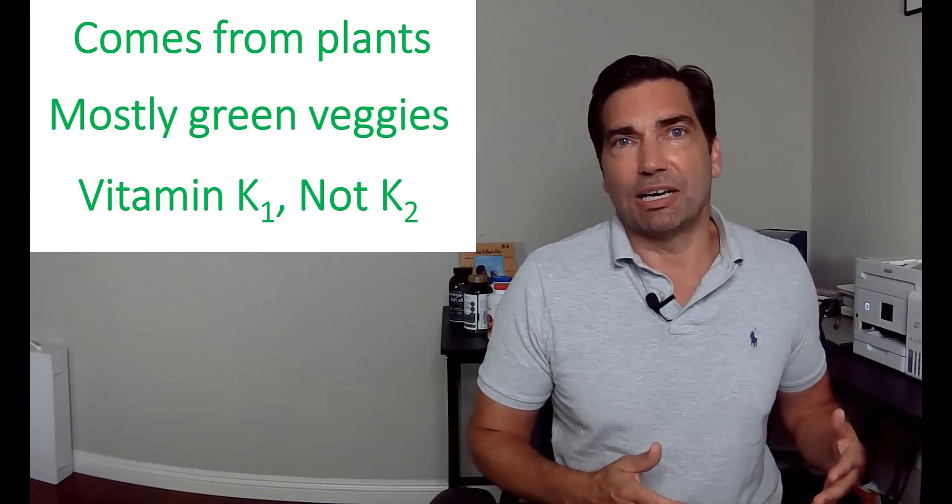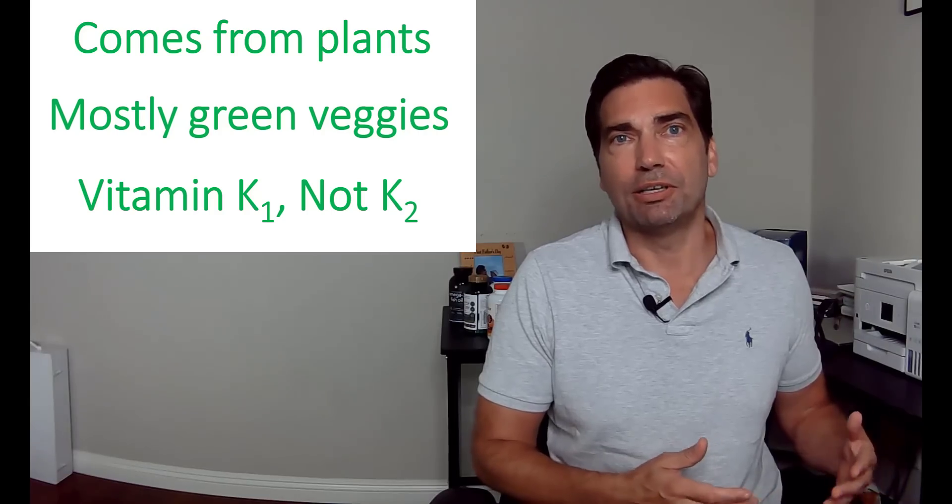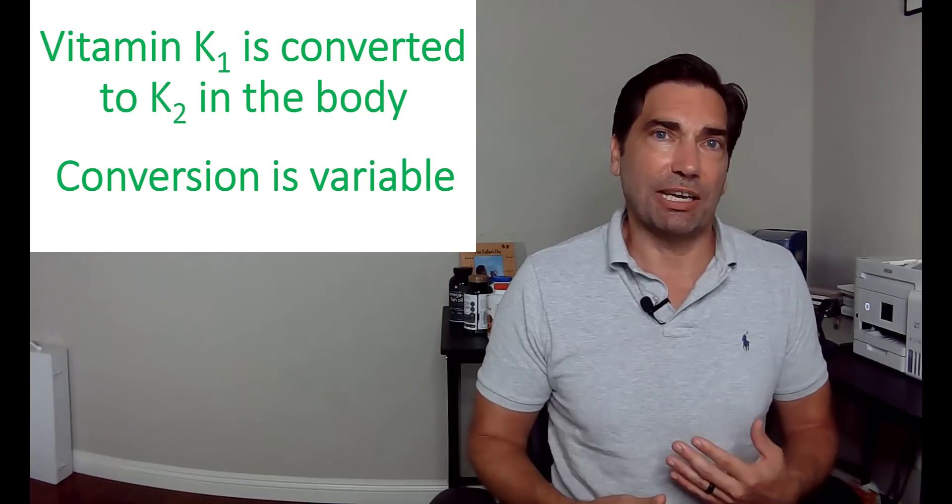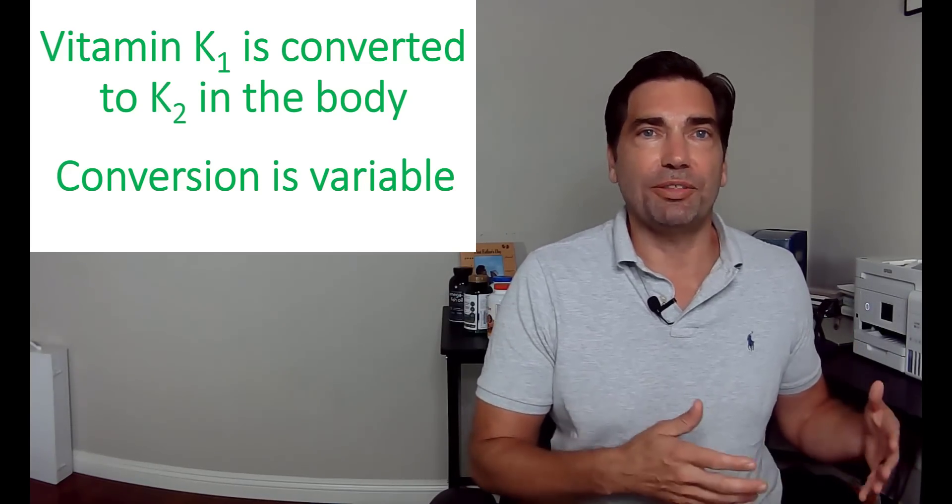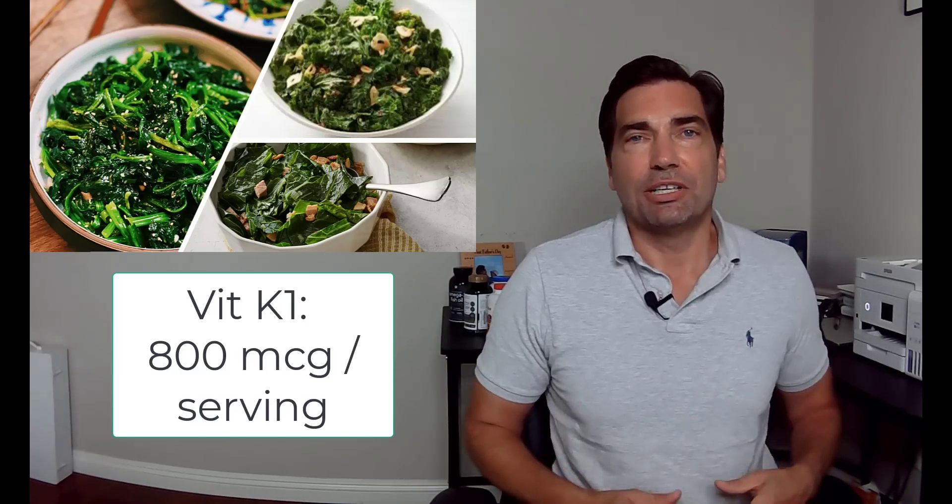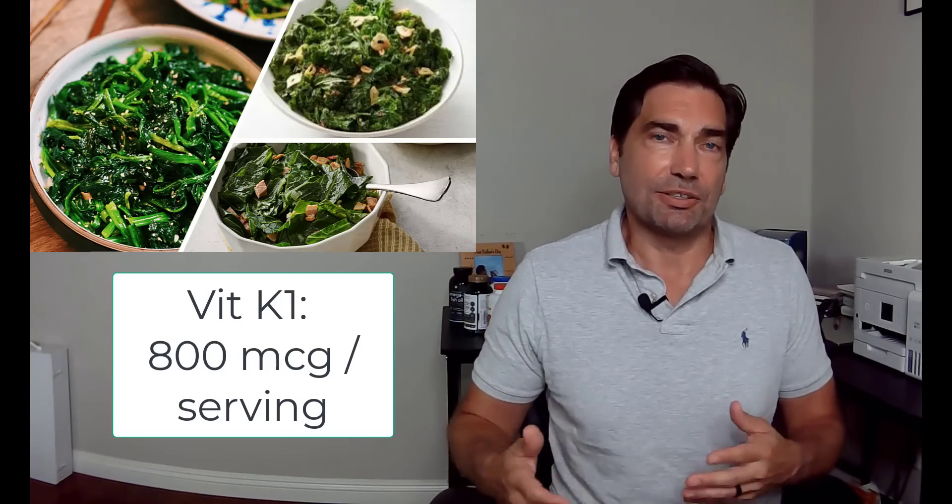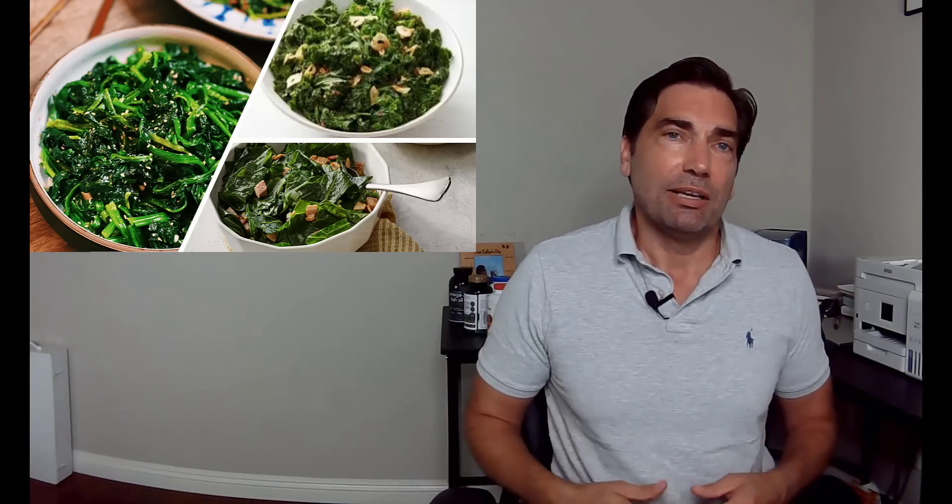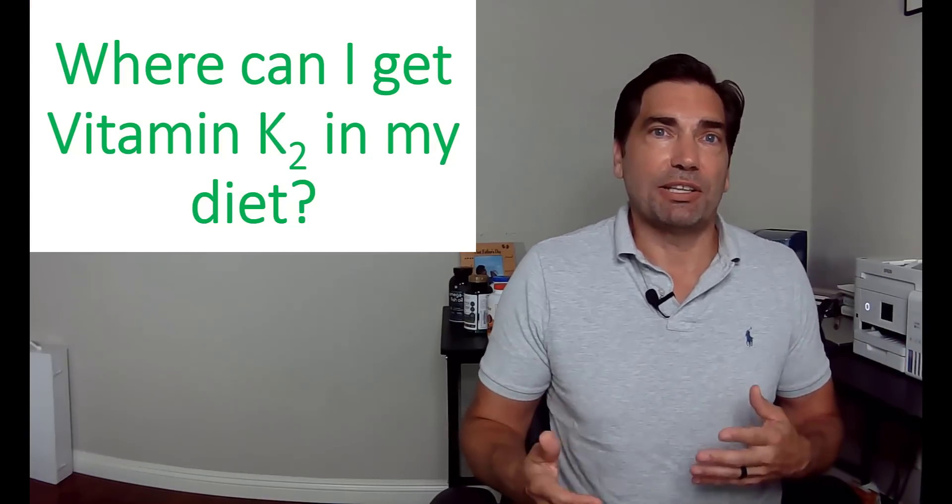The vitamin K that we get from the diet is largely plant-based and largely in the form of vitamin K1, which our body then converts into the vitamin K2 that we're talking about in this video. A healthy serving of kale or chard or spinach can have about 800 micrograms of vitamin K in it, so it's a pretty good dose. If you had that several times a week, you'd really be in good shape. You have to rely on your body to convert vitamin K1 to vitamin K2.